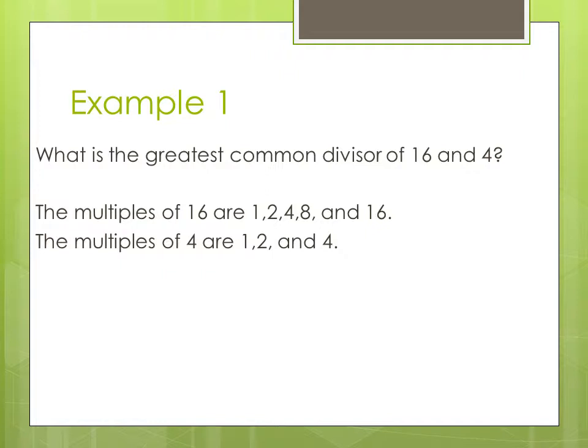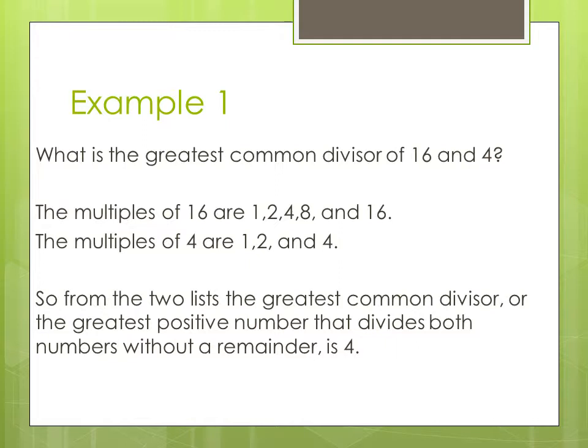And we know the multiples of 4 are 1, 2, and 4. So from the two lists the greatest common divisor or the greatest positive number that divides both numbers without a remainder is 4.